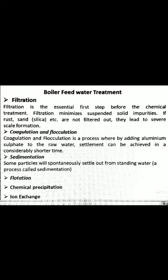Next is chemical precipitation. Chemical precipitation is a process in which a chemical added reacts with dissolved minerals in water to produce a relatively insoluble reaction product. Precipitation methods are used to reduce dissolved hardness, alkalinity, and silica. The most common example is lime-soda treatment.